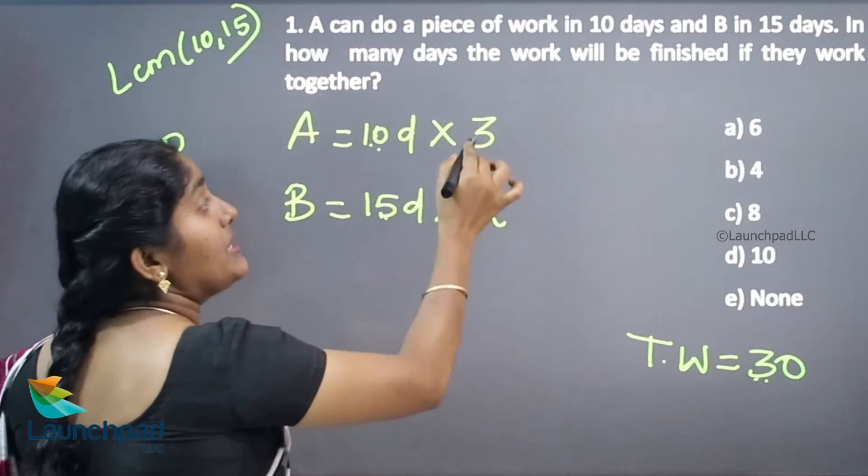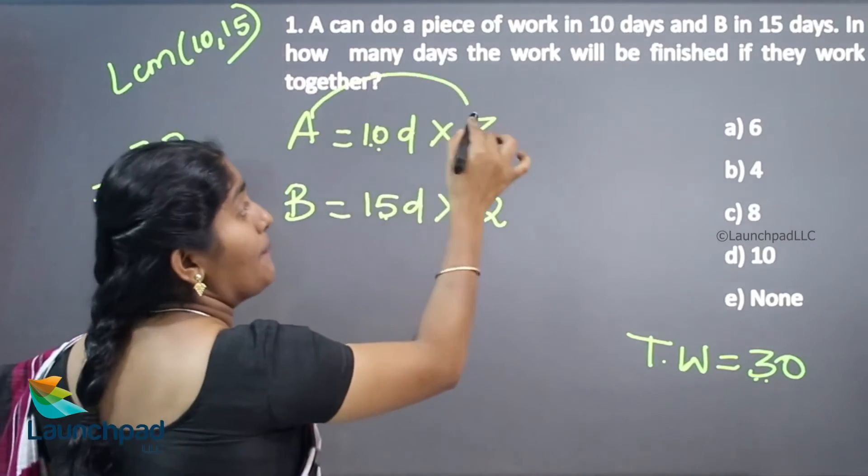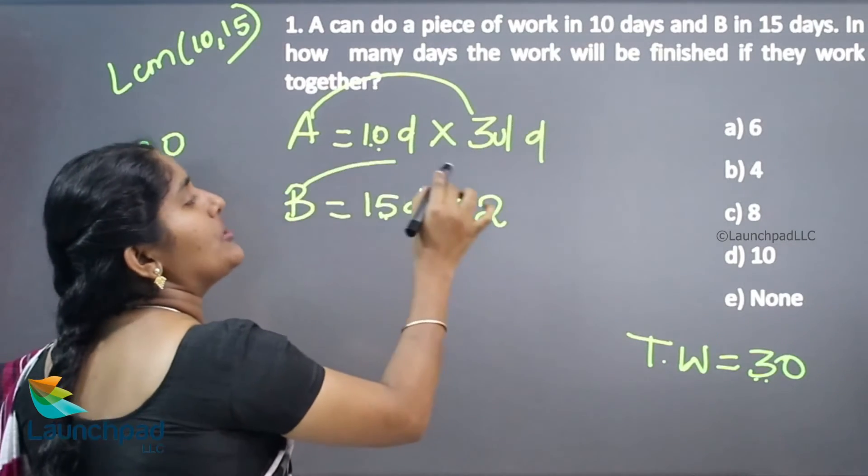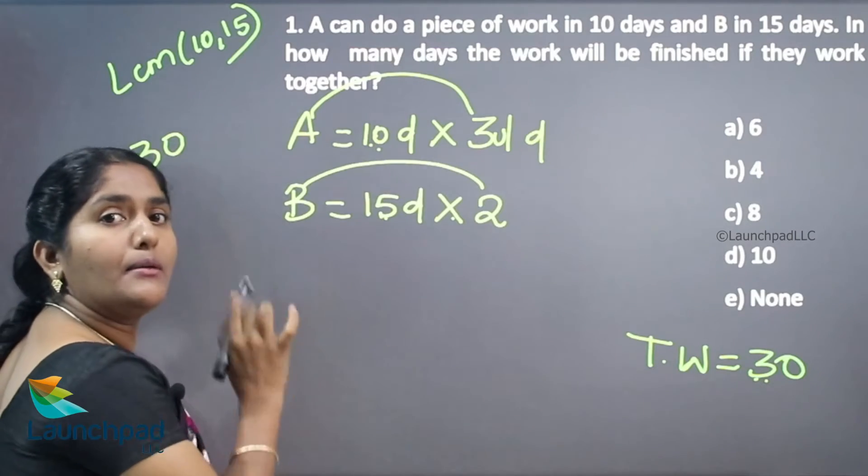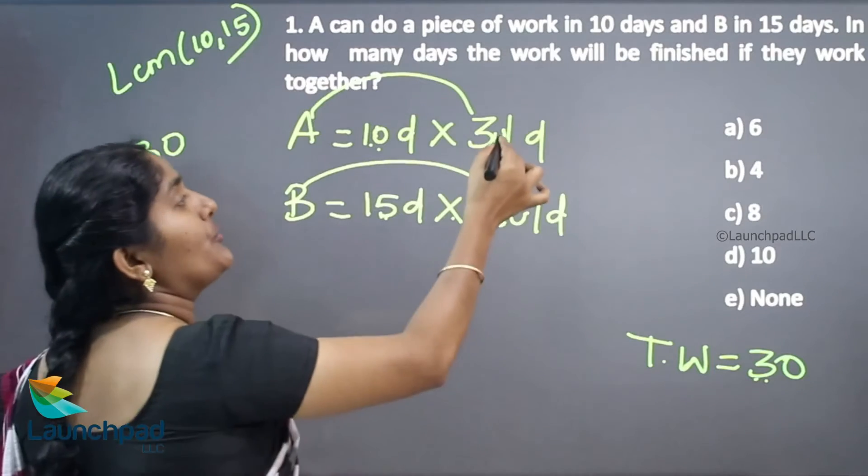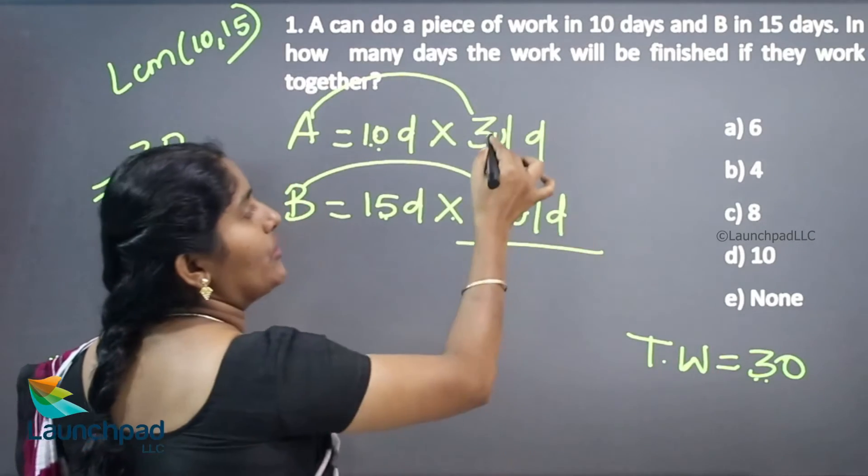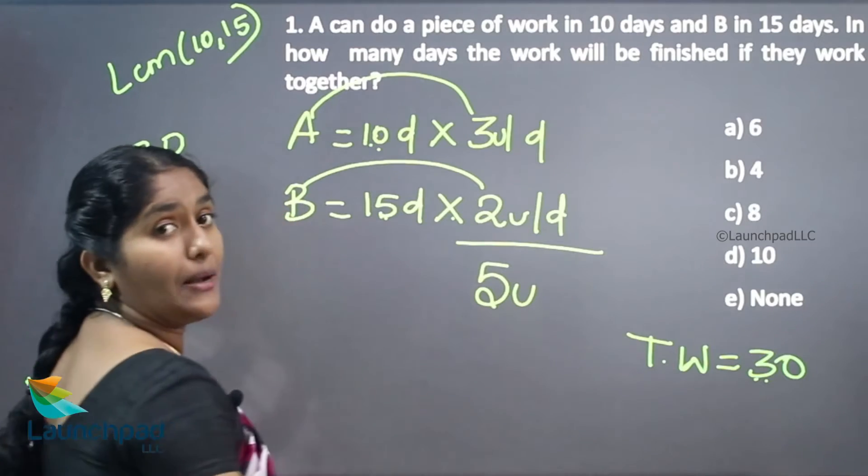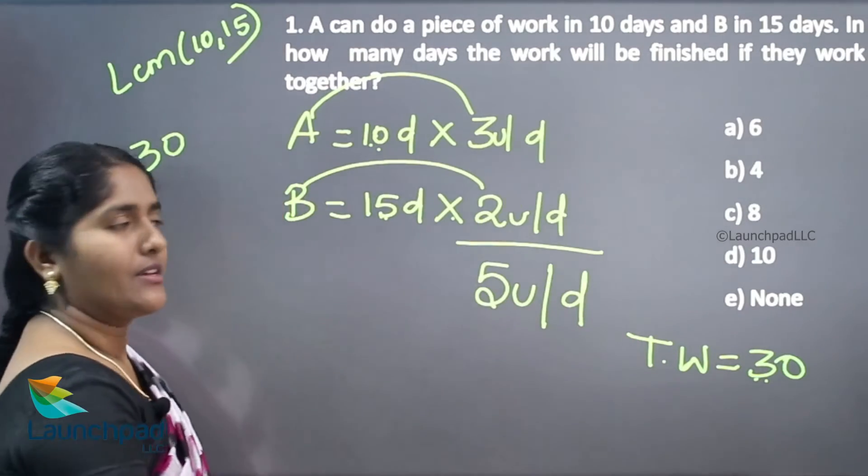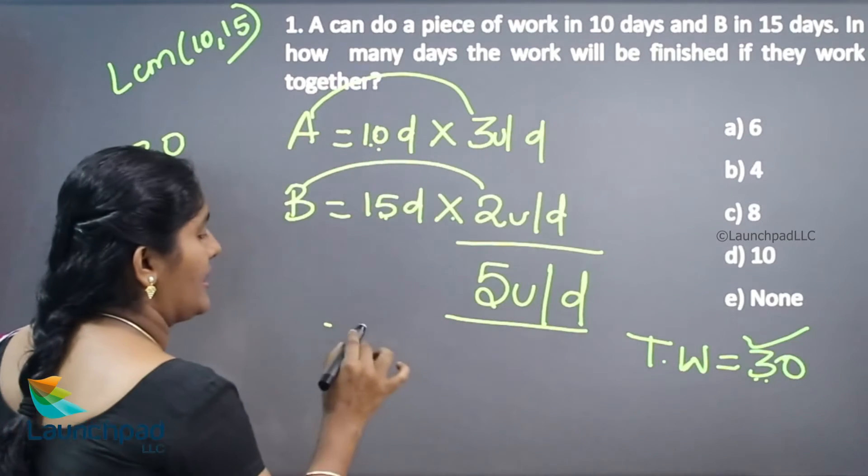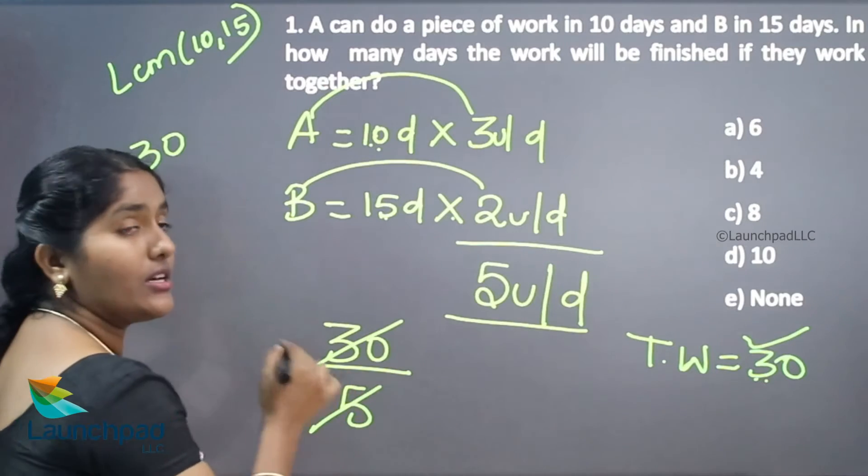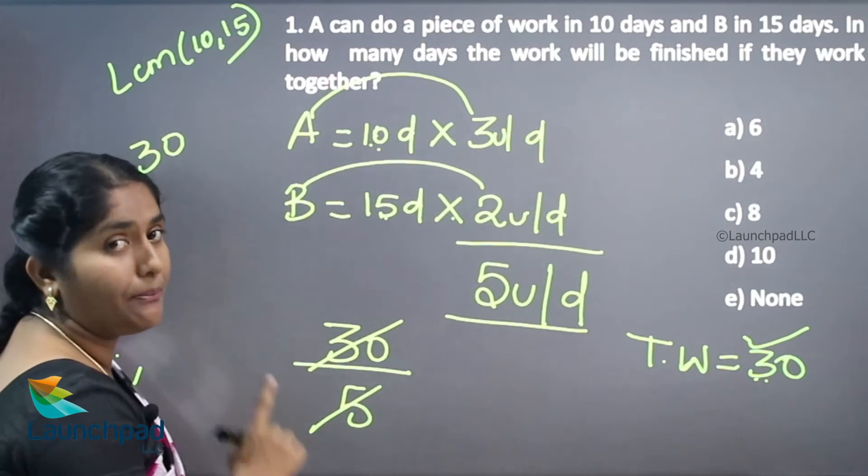This means A can complete 3 units per day. If B goes to the job, he can complete only 2 units per day. If both can join, they can complete 5 units per day. Totally 30 units are there. 30 divided by 5, because 1 day they can complete 5 units.